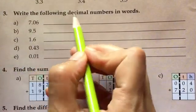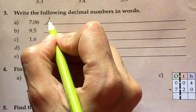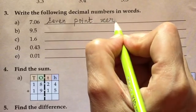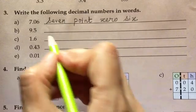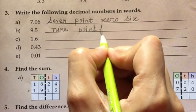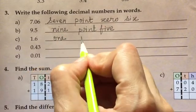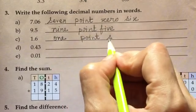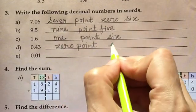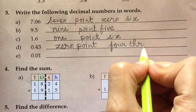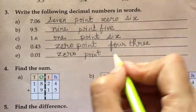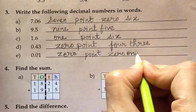Now the next question, write the following decimal number in words. So this is 7.06, this is 9.5, this is 1.6, this one is 0.43, 0.01.